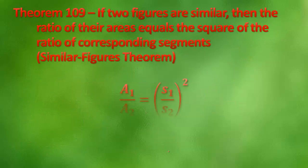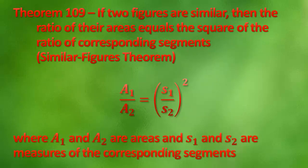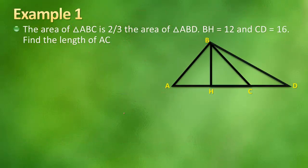And that takes us to theorem 109. If two figures are similar, then the ratio of their areas equals the square of the ratio of their corresponding segments. And this is called the Similar Figures Theorem. So the area of 1 over the area of 2 is equal to, and s doesn't necessarily just mean sine. It could mean any corresponding part or segment. Segment 1 over segment 2 squared, where a1 and a2 are areas, and s1 and s2 are the measures of the corresponding segments.